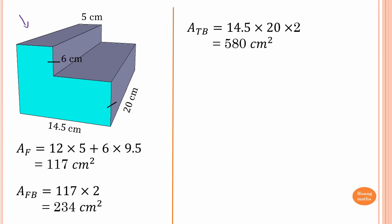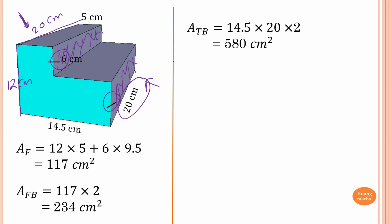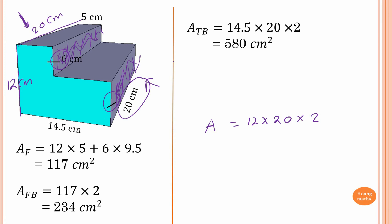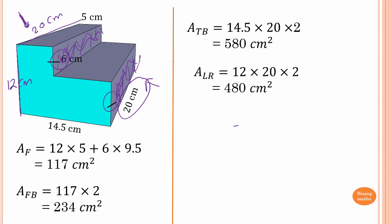What's left are the two side panels. Looking from the side view, the two side panels together are the same as the area of the back face. The width is 6 plus 6 equals 12 centimeters, and the length is 20 centimeters. So the area of both sides is 12 times 20 times 2, which gives 480 square centimeters.